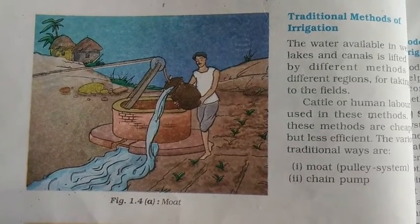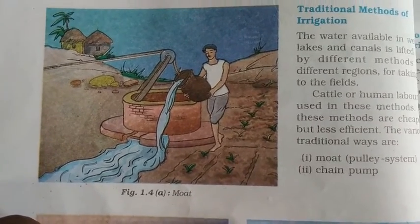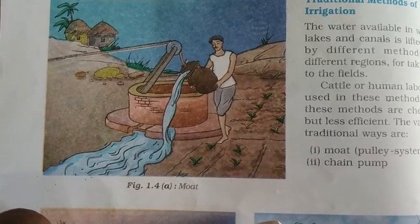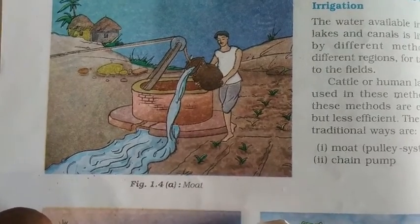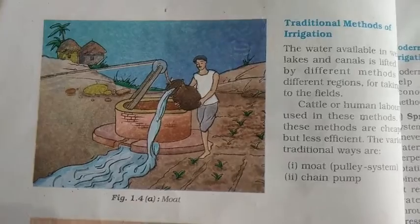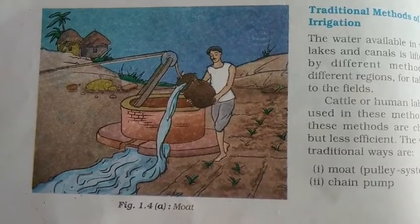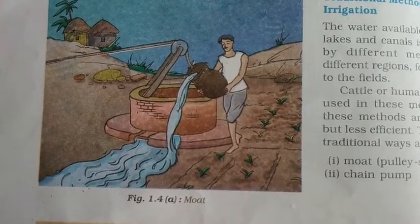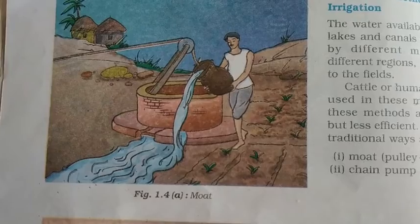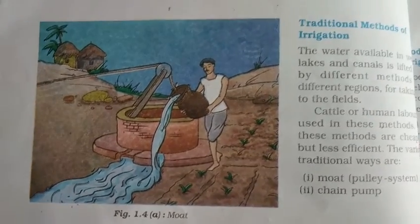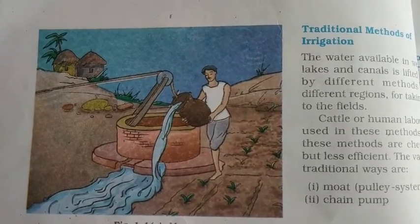There are many sources available for the process of irrigation. These sources may be wells, rivers, tube wells, ponds, lakes, dams, and canals. These are all sources of fresh water that we supply to the crops so they will grow in the proper manner.